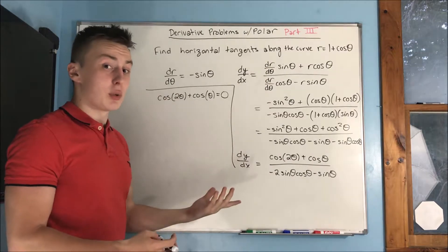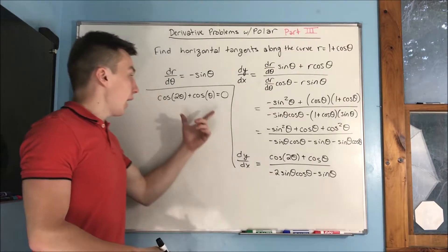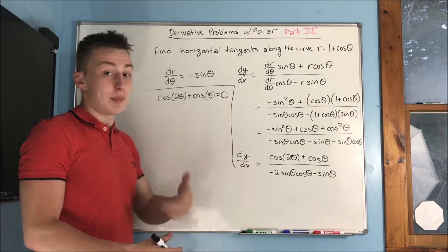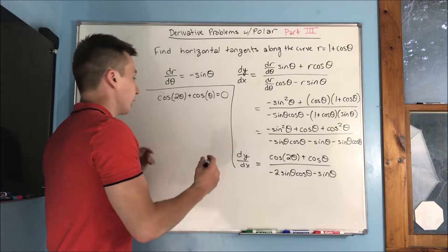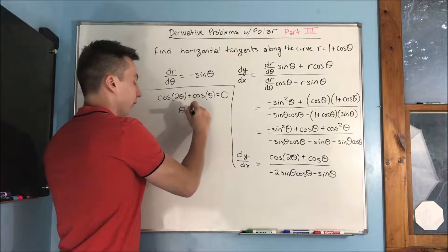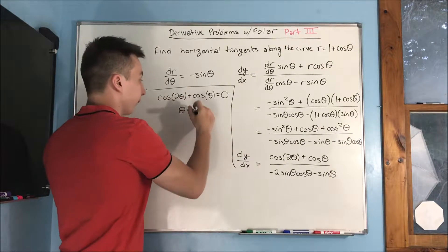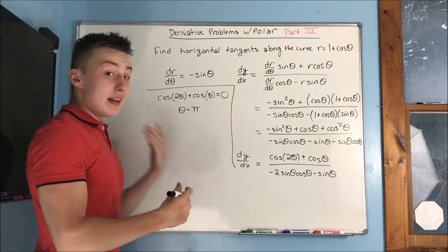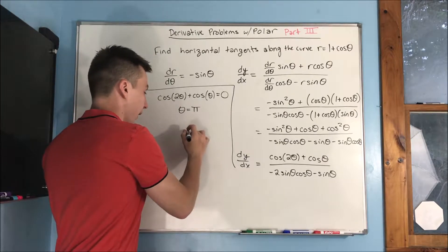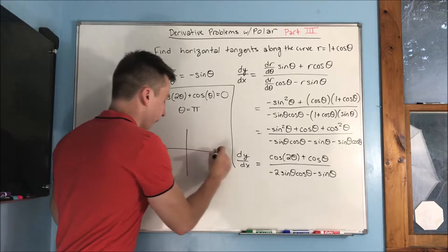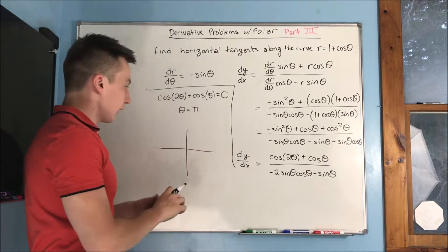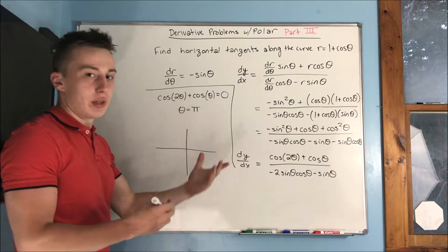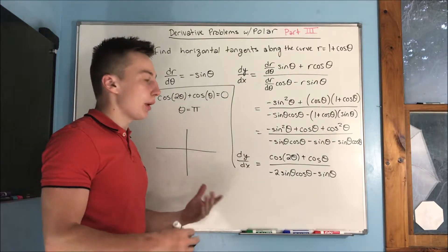One solution is theta equals pi, because cosine of two pi equals cosine of zero which is one, and cosine of pi is negative one, so those two offset to become zero. There are two other solutions, and you have to understand what's happening — you're doubling the angle.